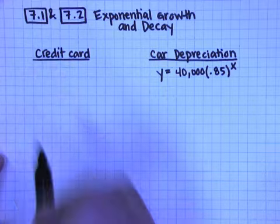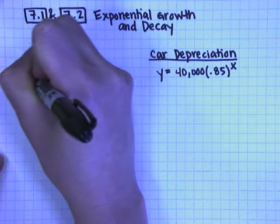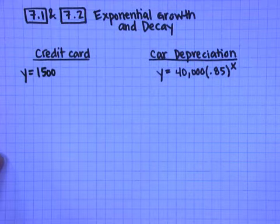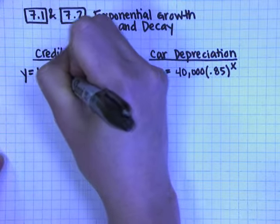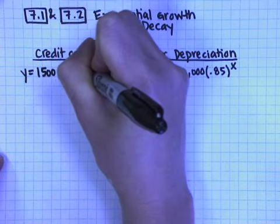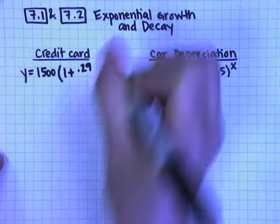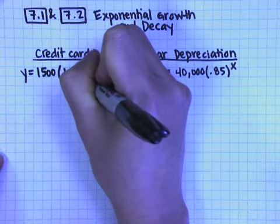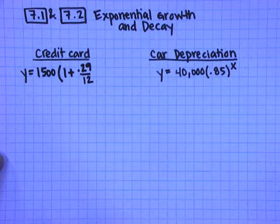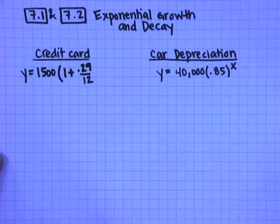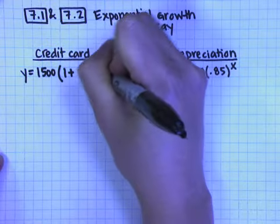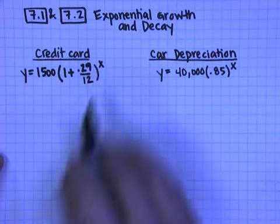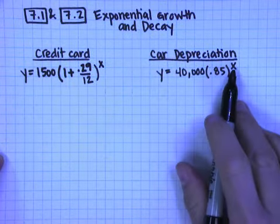And in the credit card problem, recall today that we started out with a MacBook Pro that was $1,500, and that we noticed that we had to have one plus the credit card percent, the APR, which was 29%, or 0.29. But since credit cards charge you on a monthly basis, we had to divide that number by 12 to get the percent for each month. And then we were raising that to the x power, where x in this case was number of months, and here x was number of years.